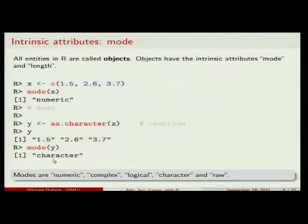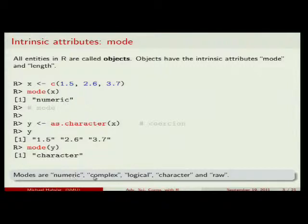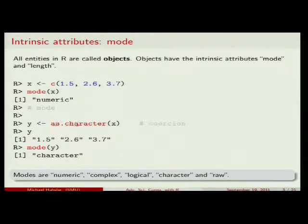There are some modes or object types built into R: numeric (almost everything is numeric), integer, complex numbers as their own data type, logical, character, and a raw type which can store pointers and similar things.